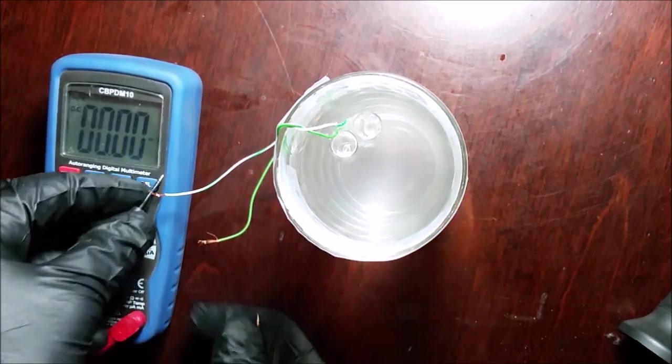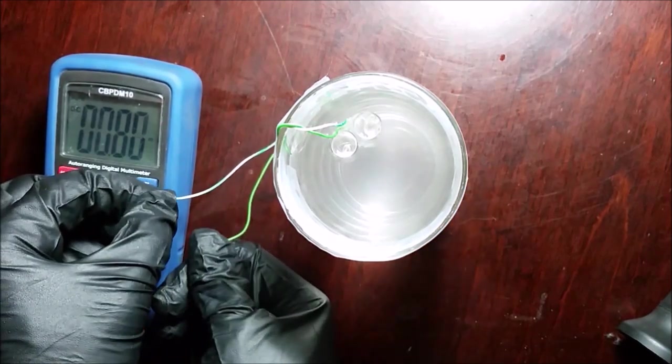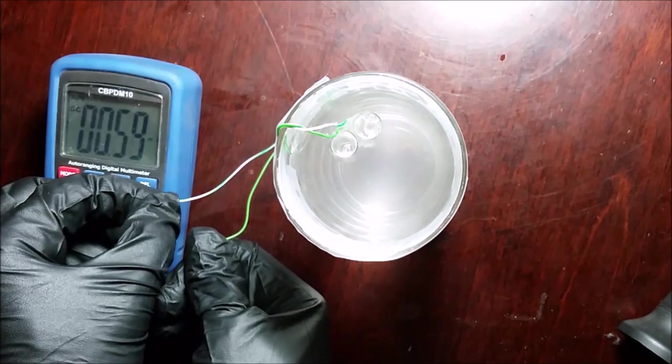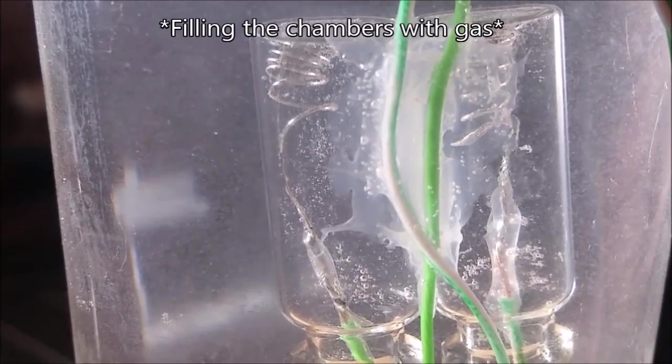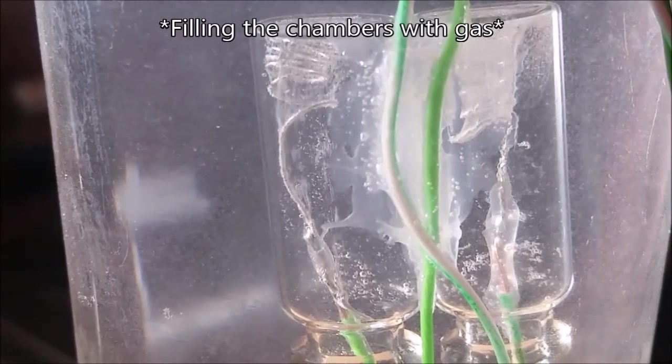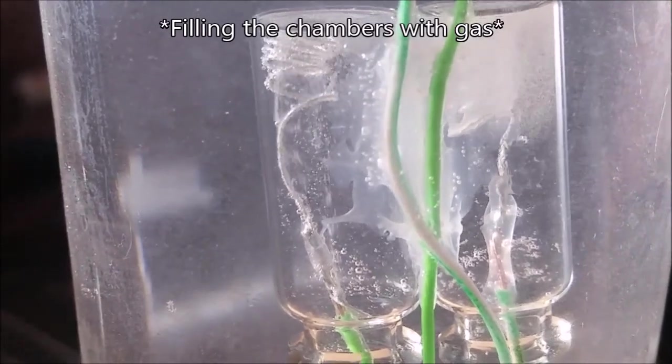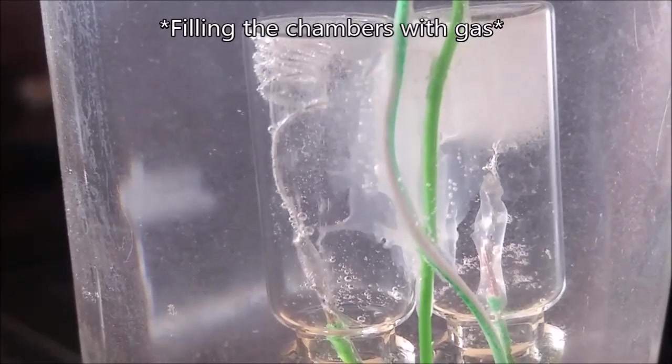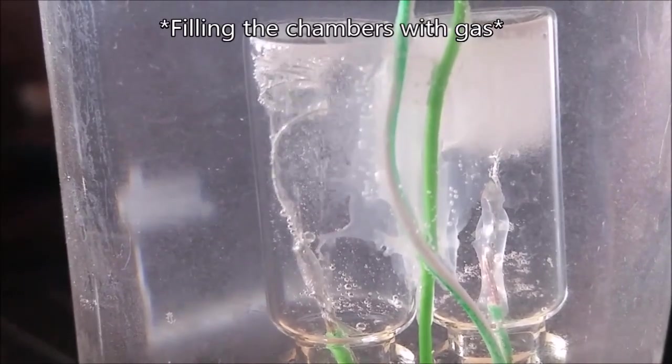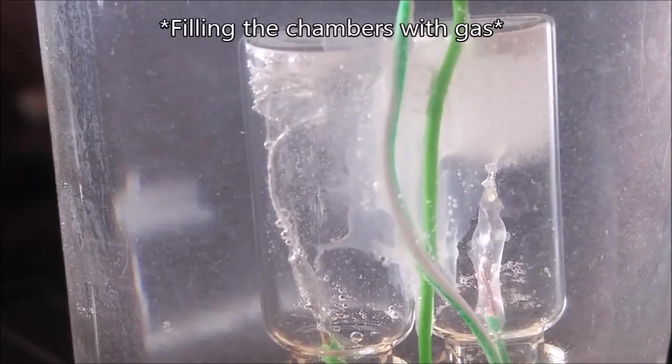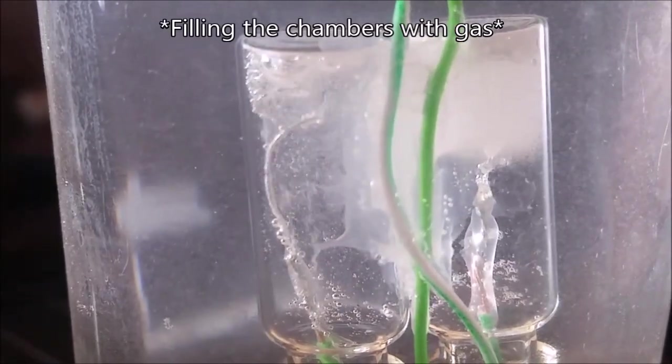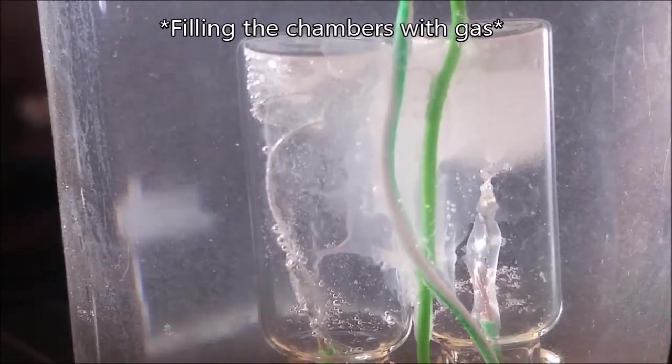Now I test the maximum amperage by shorting it through the voltmeter and I get right about half a milliamp. That amount of current is well below the amount needed to run even the smallest LED lights. So I think I'm going to have to actually scale up in future projects and do multiple cells with much more surface area and perhaps a way to get the electrolyte and gas to contact the electrodes at the same time.